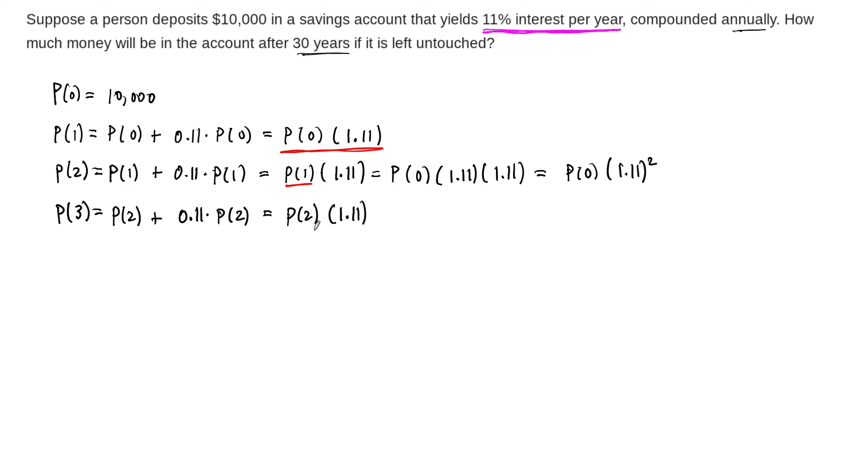And once again, we can go back and we can plug in our formula for P(2) in terms of P(0), in terms of our initial investment. So everything's going back to this initial investment. And so at this point, this can be written as P(2), it's going to be P(0) times 1.11 squared, and then times another 1.11. And that can of course be combined to be P(0) times 1.11 to the third power.